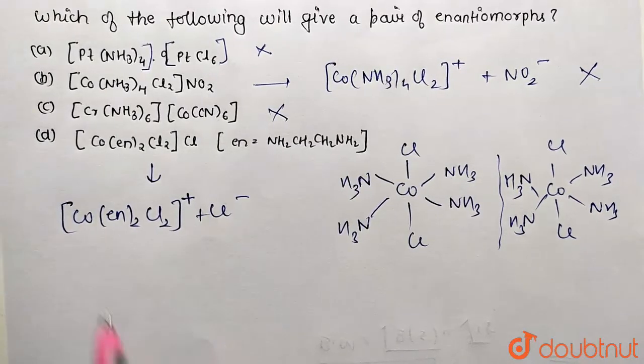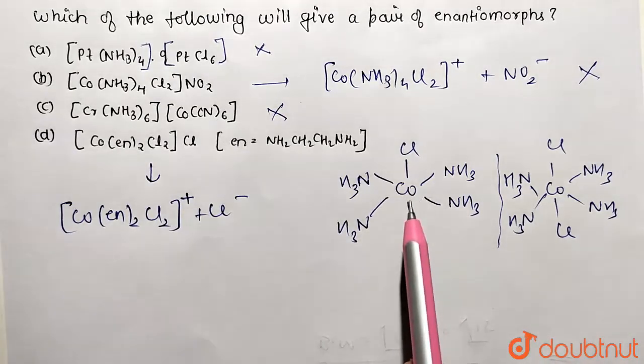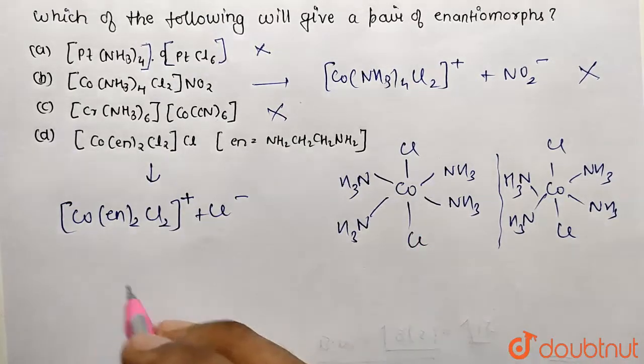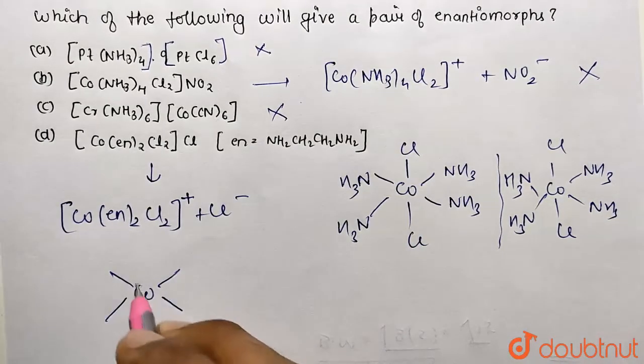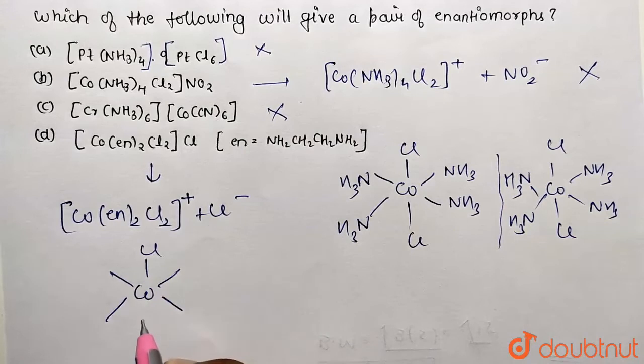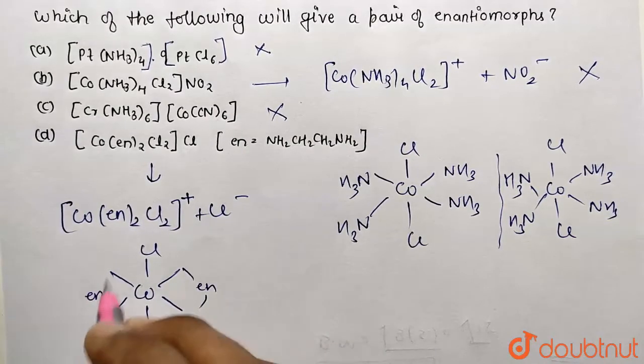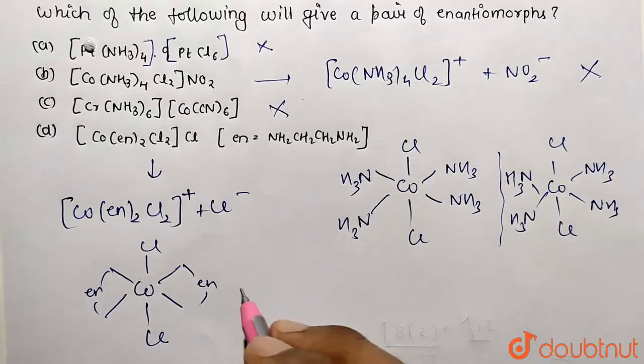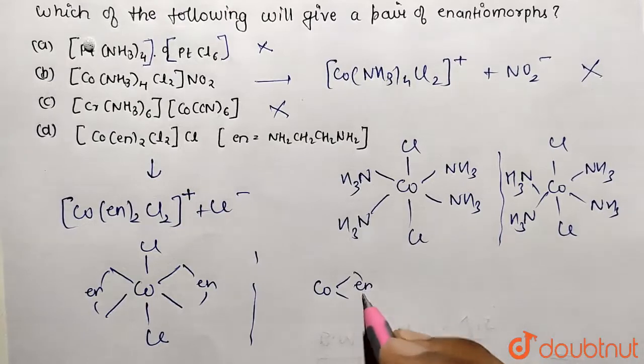optical isomer in this compound. So let me draw its geometry. So it's also going to have two geometry: one is going to be cis form, another is going to be trans form. Trans form will be drawn just like this one. If I draw the trans form, then we will consider the cis. So Cl and Cl are going to be exactly opposite, and en will be represented over here because it is bidentate ligand. So this trans form, if I also draw the mirror image, then it's going to be superimposable in nature. So that's why